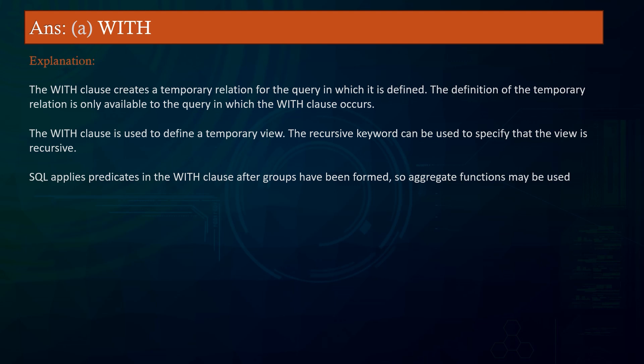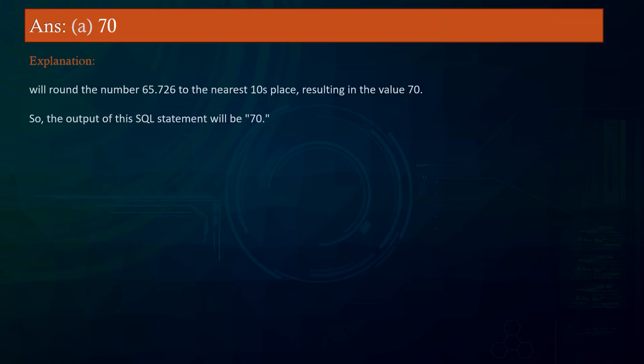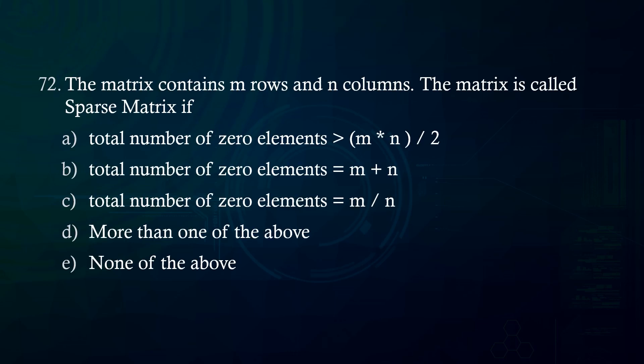The SQL statement prints: A. 70 B. Garbage C. 726 D. More than one of the above E. None of the above. Answer: 70. Explanation: The ROUND function will round the number 65.7 to the nearest integer, resulting in the value 70. So the output of this SQL statement will be 70.